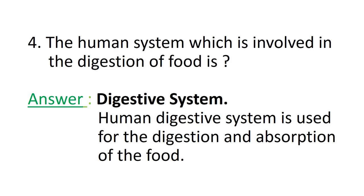Question number 4: The human system which is involved in the digestion of food is? We all are aware that the digestive system is responsible for the digestion and absorption of food in our body. So, the correct answer is the digestive system.